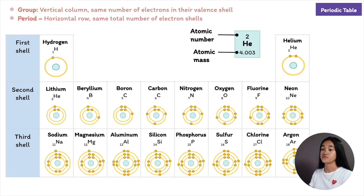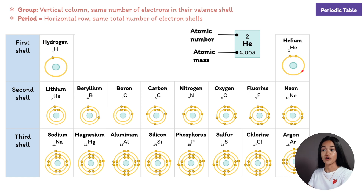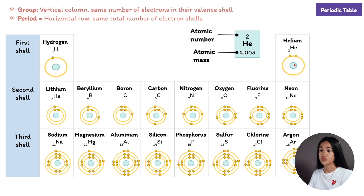Each element is presented with the element symbol in the middle, atomic number at the top (number of protons), and atomic mass at the bottom (number of protons plus neutrons). The circles represent electron shells with dots representing electrons and the nucleus in the middle. Each concentric circle represents the average distance between an electron in that shell and the nucleus.